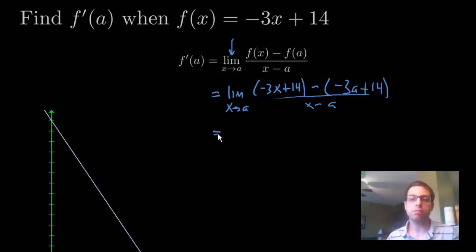Alright, now, you want to simplify the top by removing parentheses, you're going to have the limit as x approaches a. Alright, there's technically like a little 1 in front of these parentheses, so you can just remove those, and just have -3x + 14. But then when you remove the parentheses on this piece, you have to distribute that negative sign.